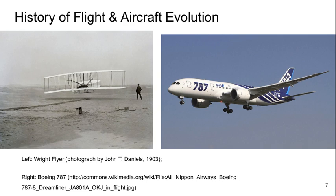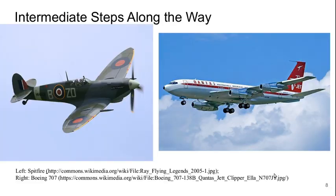On the left side of this slide you see the Wright Flyer, which is the very first heavier-than-air powered aircraft to fly in 1903. On the right we see a very modern aircraft, the Boeing 787. Here are some intermediate steps along the way: on the left, the Spitfire from the Second World War era, and on the right the Boeing 707, which was sort of the first jet engine powered commercial airliner.